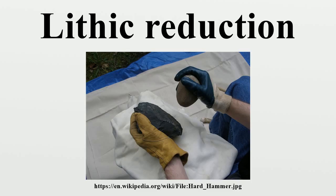The propagation of force through the material takes the form of a Hertzian cone that originates from the point of impact and results in the separation of material from the piece, usually in the form of a partial cone, commonly known as a lithic flake. This process is predictable, and allows the flint knapper to control and direct the application of force so as to shape the material being worked.